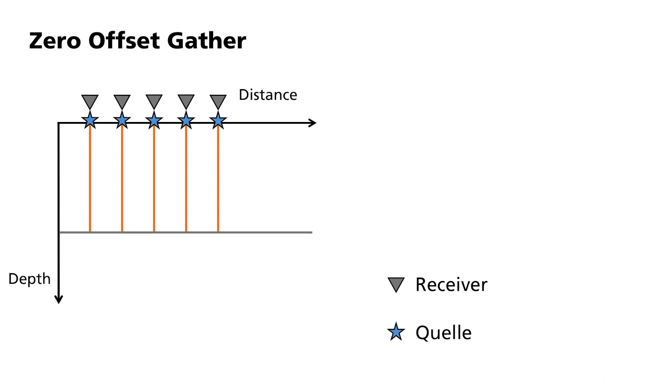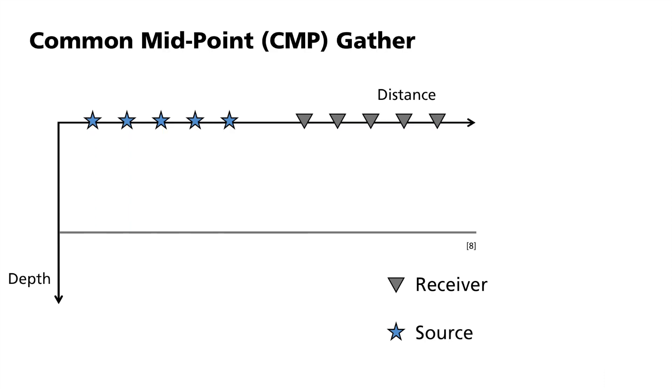For real measurement data, this can be simulated by stacking. For horizontal reflectors and homogeneous media, they form an arbitrary point in a subsurface directly above on the Earth's surface. The most common gather is based on a common midpoint in the subsurface and is referred to as common midpoint or in short CMP.